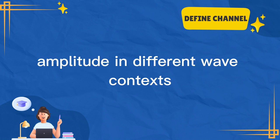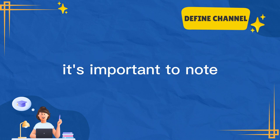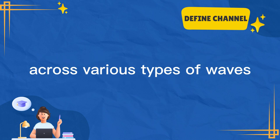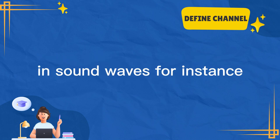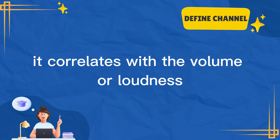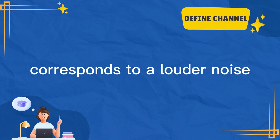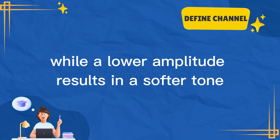Amplitude in different wave contexts. It's important to note that amplitude manifests differently across various types of waves. In sound waves, for instance, it correlates with the volume or loudness of the sound. A higher amplitude sound wave corresponds to a louder noise, while a lower amplitude results in a softer tone.